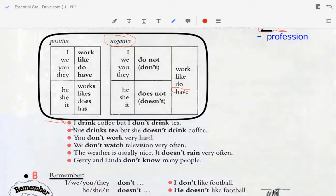You don't work very hard. We don't watch television very often. The weather is usually nice, it doesn't rain very often. Jerry and Linda don't know many people.